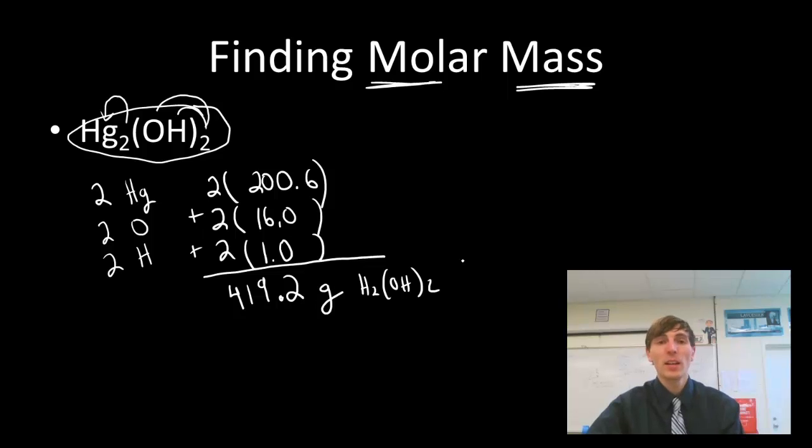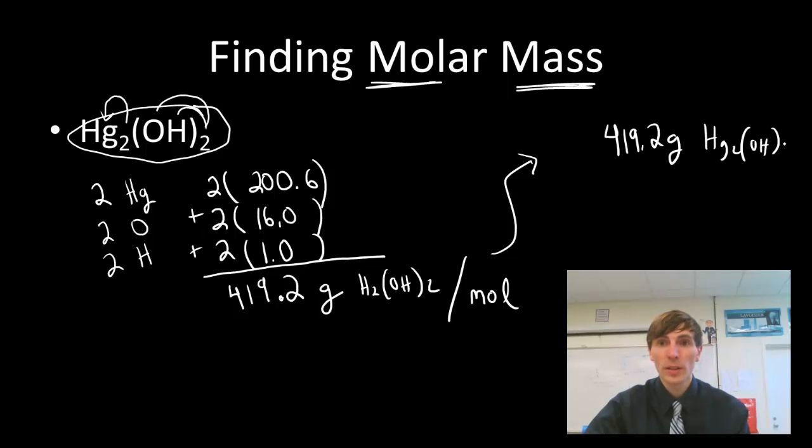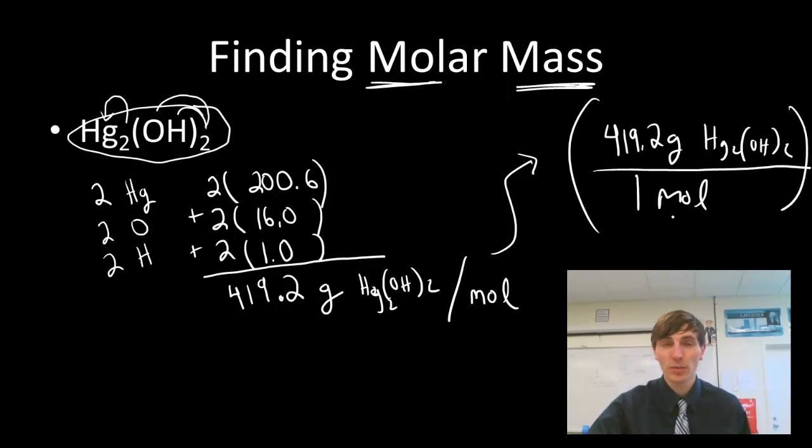This is mercury-1 hydroxide. And that's going to be the number of grams in grams per mole. Number of grams per mole. Now you may see this written, 419.2 grams of Hg2OH2 per one mole of that substance. And that's another way you may see it written, if we're using it as a conversion factor. And I can flip that around.